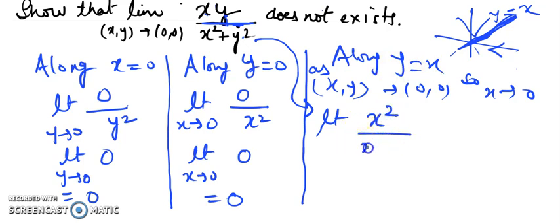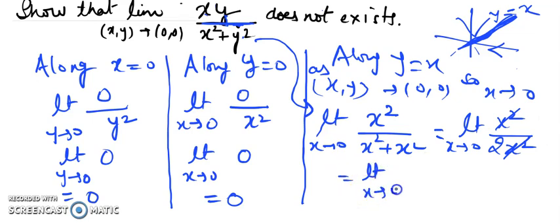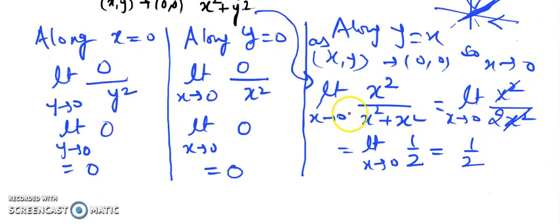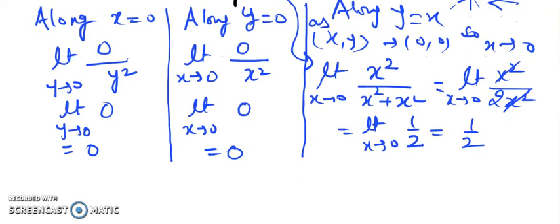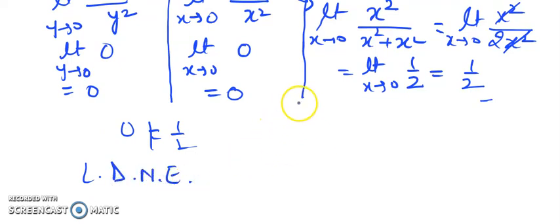Putting y = x, the numerator becomes x·x = x², and the denominator becomes x² + x² = 2x². So the expression reduces to x²/(2x²), which simplifies to 1/2. The limit as x tends to 0 of the constant 1/2 is 1/2. This path gives 1/2, which is different from 0.